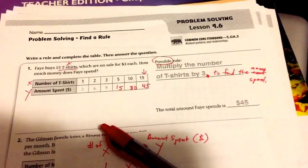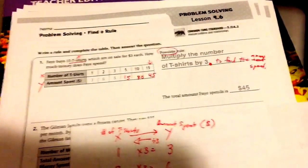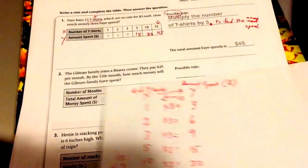If you want to have two answers, you could say multiply the number of t-shirts by three to find the amount of money spent, or you could say divide the amount spent by three to find the number of t-shirts. So if you want to switch these two—put the amount spent here and the t-shirts here—you'll do the inverse. Instead of multiplying by three, you'll divide by three.